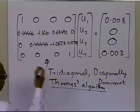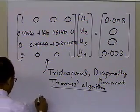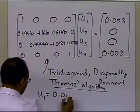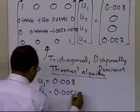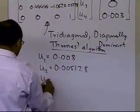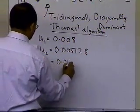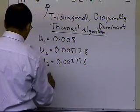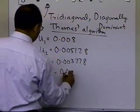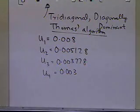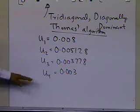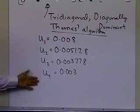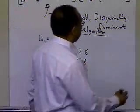We solved these four equations with four unknowns and obtained: u_1 equal to 0.008, u_2 equal to 0.05128, u_3 equal to 0.003778, and u_4 equal to 0.003. So now we have a profile showing how u behaves as a function of r.